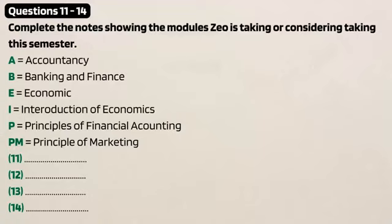How are you getting on, Zoe? Feeling at home yet? Well, more or less. There are still some things I need to buy and I haven't found my way to all the facilities yet, but I really love the campus and I've already made a few friends. Fantastic. Now let's see what we can do to get your studies off to the right start. You're on the foundation course, so you can take up to eight modules. What we advise is that you take four modules in the first semester and, assuming everything goes well, four in the second. Have you decided which you want to take this semester? I haven't made my mind up yet.